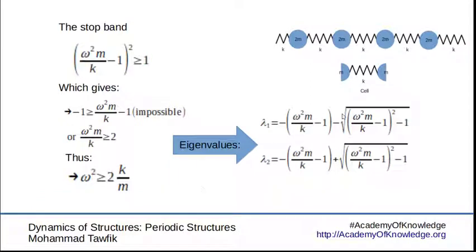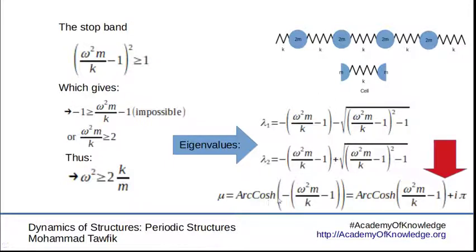Finally, we get the eigenvalues. In this case, both are real numbers. When they are both real numbers, adding them, we lose the square root part, and we get a negative of omega squared m over k minus one, as you can see here.